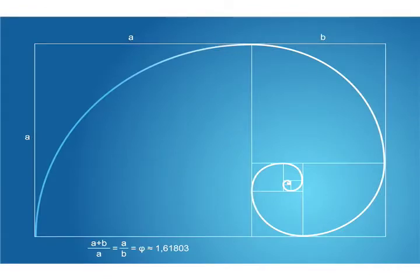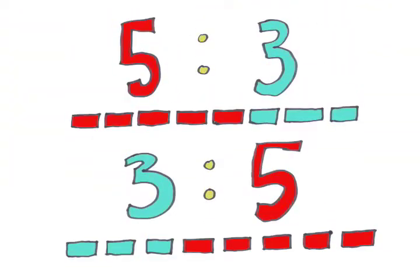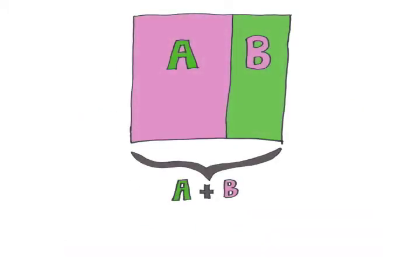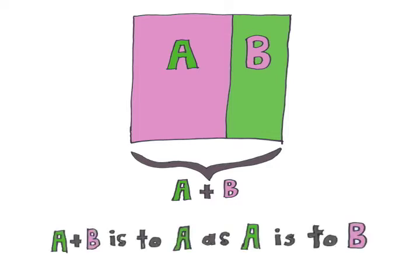The golden ratio in layman's terms is five to three or three to five. So basically you want to create a space with two sections where the smaller section's width to the larger section's width is the same as the larger section's width to the two sections combined. Got that?